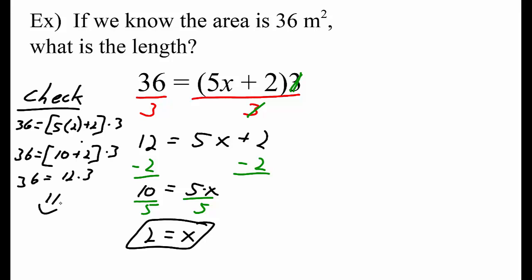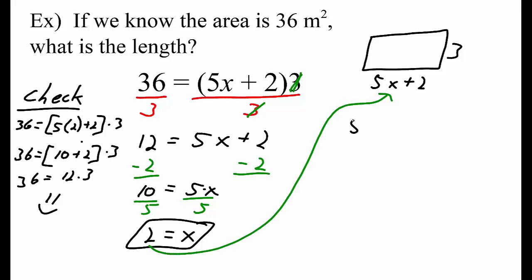Now the question is, what is the length? So we're actually not done yet, because 2 is not the length. Remember our picture — the length is 5x plus 2. We know that x equals 2, so we'll substitute it into the expression for the length. 5 times 2 plus 2 equals 10 plus 2, which equals 12. So the length of the rectangle is 12 meters. Quick little mental check: 12 times 3 equals 36 square meters.